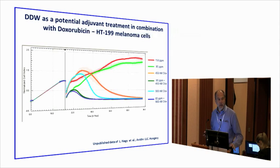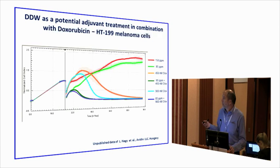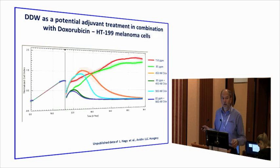Our plan is to integrate deuterium depletion into oncotherapy. We tested a couple of chemotherapy agents. Here you can see the growth rate in normal water, the growth rate in deuterium-depleted water at 85 ppm, and two curves showing growth rate when treated with doxorubicin — a commonly used chemotherapy agent. That was the result when we used both at the same time. All the clinical results I will show are from the combination of conventional therapy plus deuterium-depleted water.